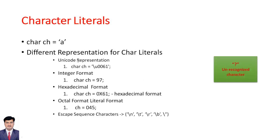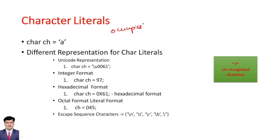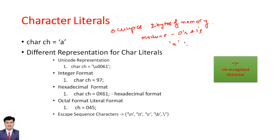Character literals occupy two bytes of memory. Our machine can understand only binaries — zeros and ones. It will never understand whatever we represent within single quotes, so internally it has to be represented into binary zeros and ones.